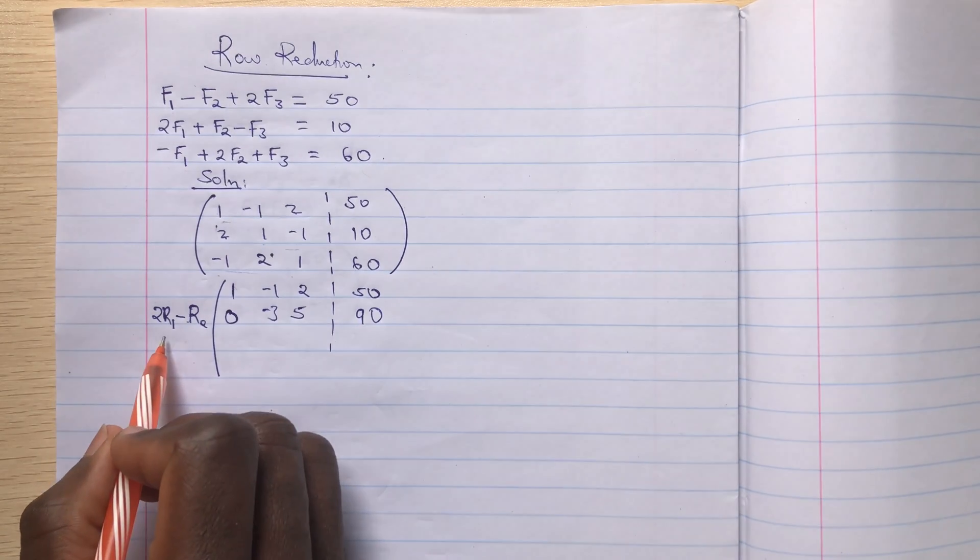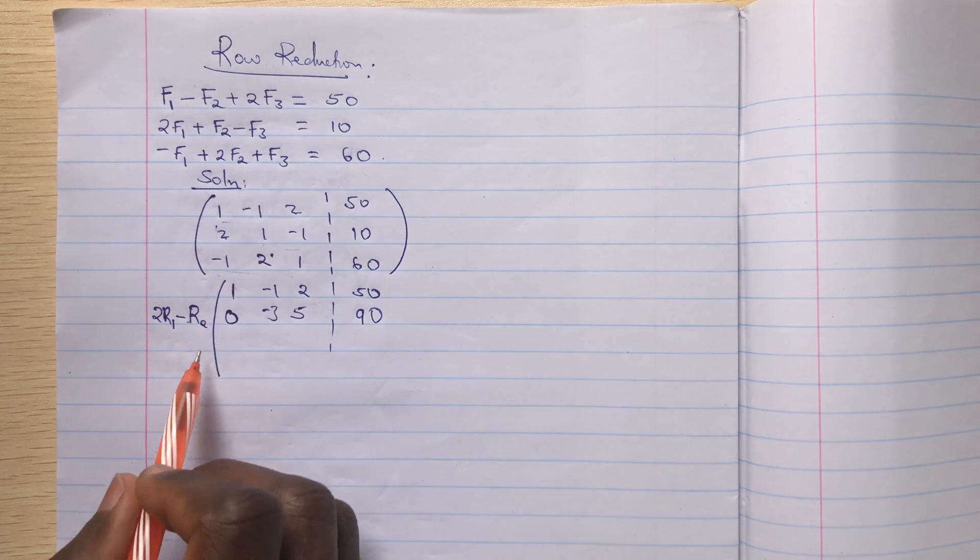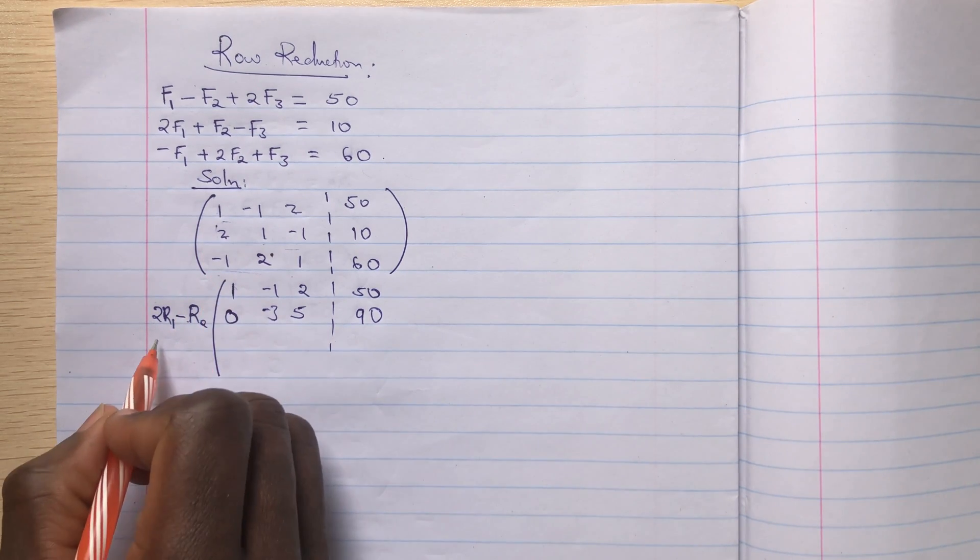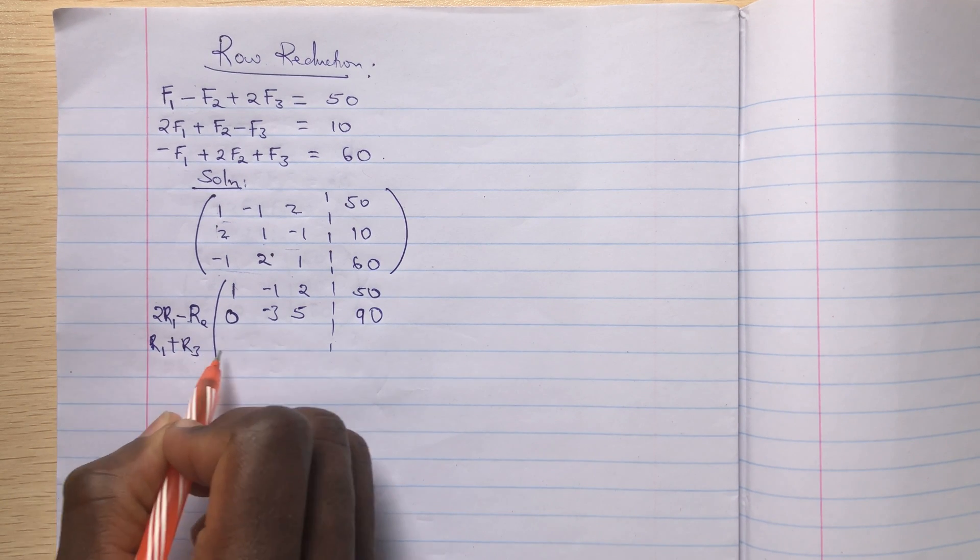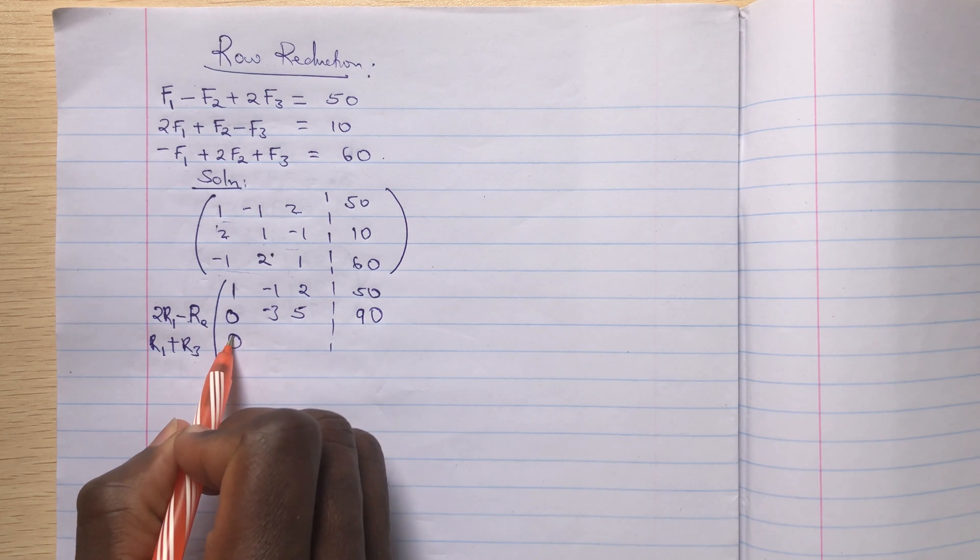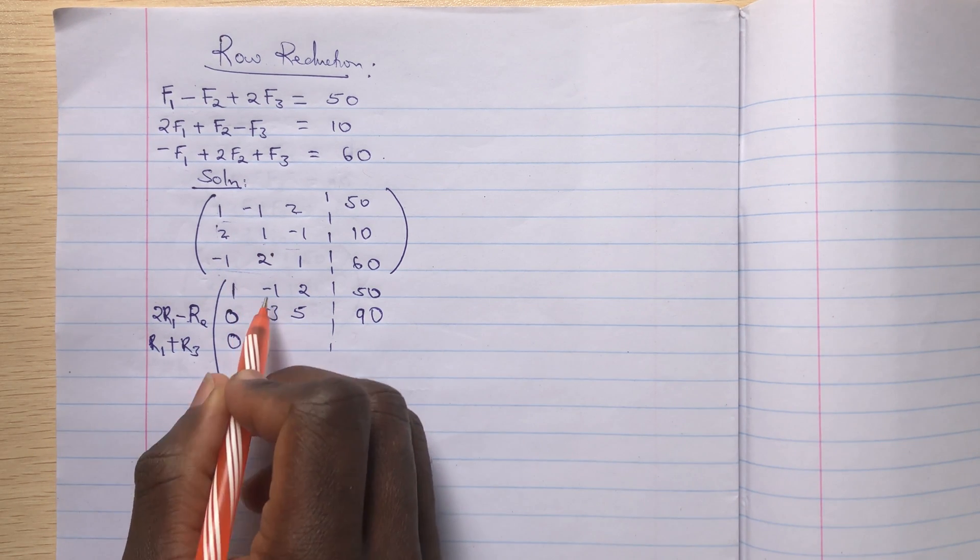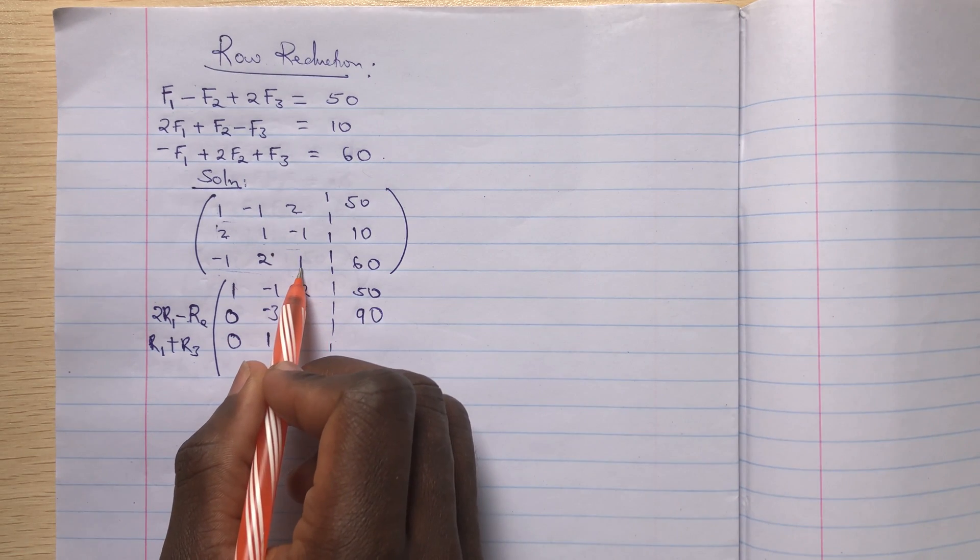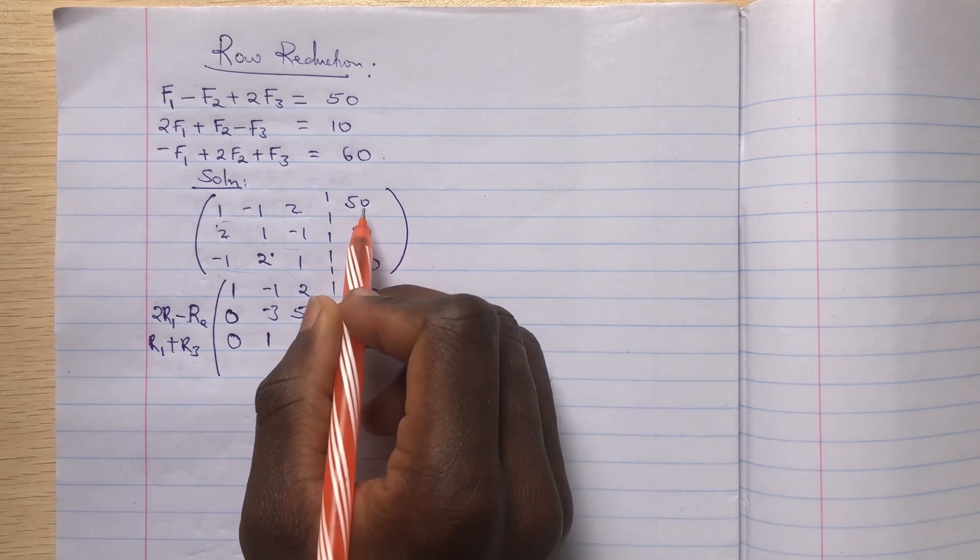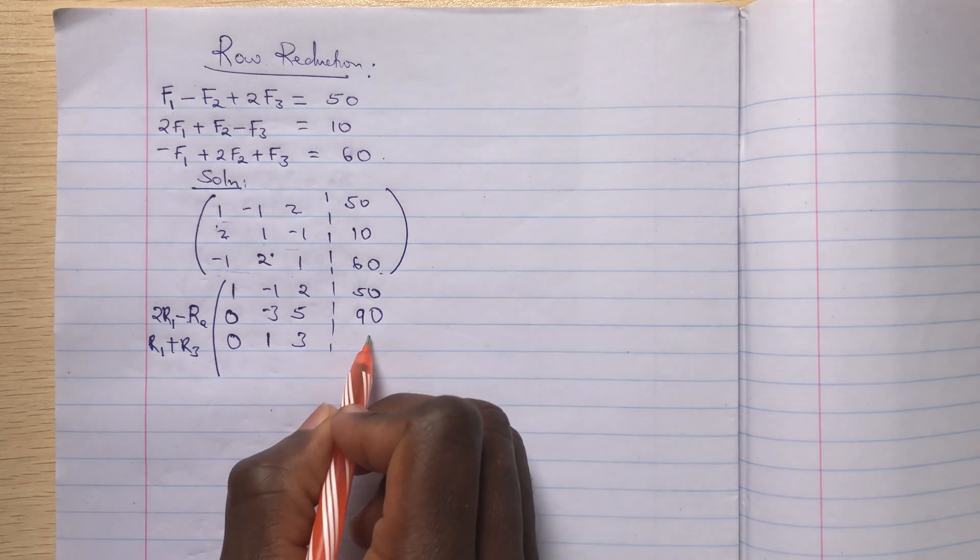Here, I'll have positive 1 and negative 1. So to create a zero here, I'll just add the two. So I'll have rho 1 plus rho 3. So 1 plus negative 1, that's 0. Negative 1, positive 2, that's positive 1. 2 and 1 plus 3. 50 and 60, that's 110.